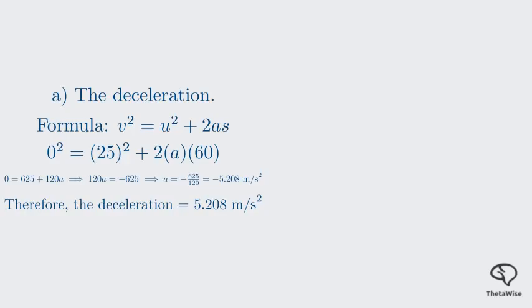Now that we have the deceleration, we can move to Part B, calculating the braking force. For Part B, we need to find the braking force, which we'll call F. The formula that connects force, mass, and acceleration is Newton's second law. Force equals mass times acceleration. This is a fundamental principle in physics.